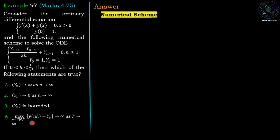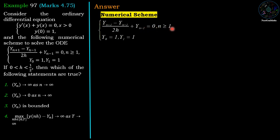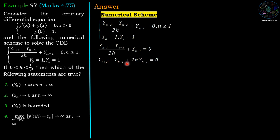We are given the numerical scheme (y_{n+1} - y_{n-1}) / (2h) + y_{n-1} = 0, for n ≥ 1, with y_0 = 1 and y_1 = 1. Simplifying this equation, we multiply through by 2h: y_{n+1} - y_{n-1} + 2h·y_{n-1} = 0, which gives y_{n+1} = (1 - 2h)·y_{n-1}.